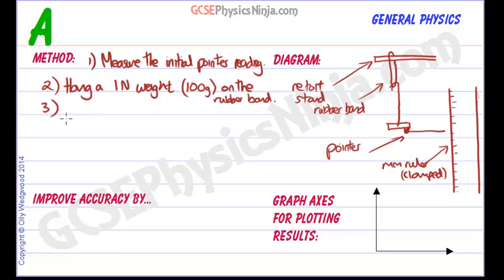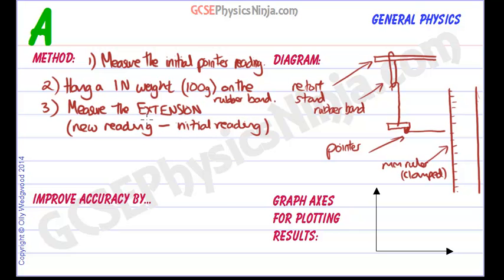Number three, we need to measure the extension. How do we do that? Well, we take the new reading once we put the load on, new reading subtract the original or the initial reading. So we've explained how we measure extension and that is going to be our dependent variable.